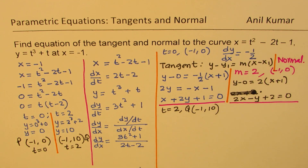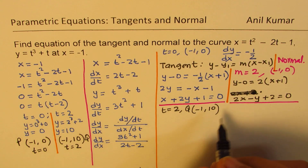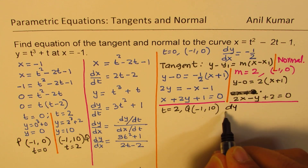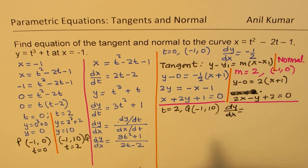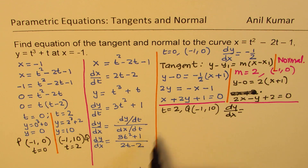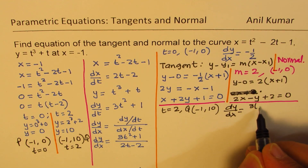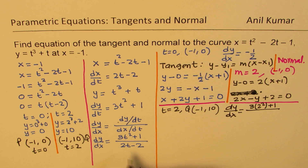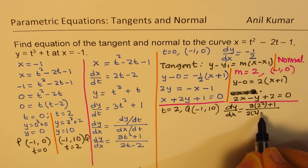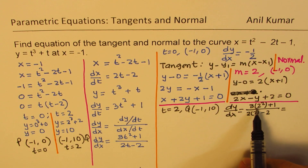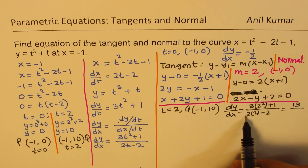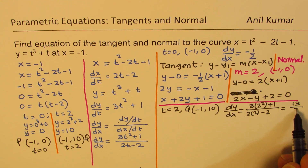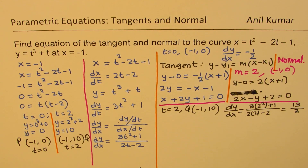The first step is to find the slope. Substituting t equals 2 into dy/dx equals (3t squared plus 1) over (2t minus 2): the numerator is 3 times 4 plus 1 equals 13, and the denominator is 4 minus 2 equals 2. So the slope is 13 over 2.